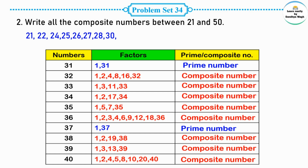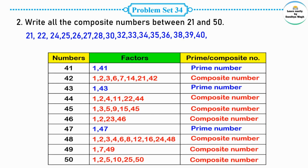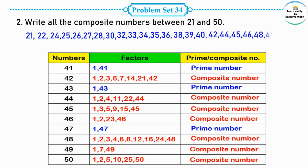So the composite numbers from 32 to 40 are: 32, 33, 34, 35, 36, 38, 39, and 40. For numbers 41 to 50: 41, 43, and 47 are prime numbers. The remaining numbers — 42, 44, 45, 46, 48, 49, and 50 — are composite numbers because they have more than two factors. So the composite numbers from 21 to 50 are listed.